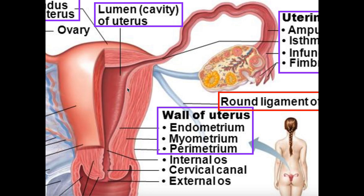The middle layer of the wall of the uterus is the myometrium. The myometrium is clearly the thickest layer, which makes sense because the myometrium, as indicated by the prefix 'myo,' is loaded with smooth muscle. This smooth muscle is especially sensitive to oxytocin.